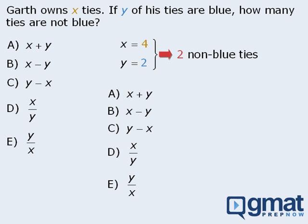When we plug x equals 4 and y equals 2 into the expressions and evaluate them, we see that two expressions yield the required output of 2. This means we can eliminate answer choices A, C, and E, leaving two possible answers. From here, we'll need to find another set of values for x and y and plug them into the two remaining answer choices to see which one yields the correct output. This of course wastes valuable time.